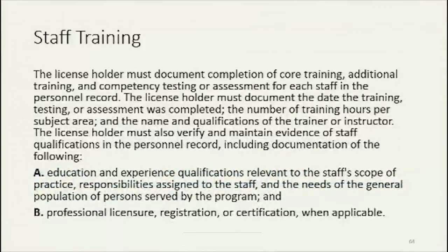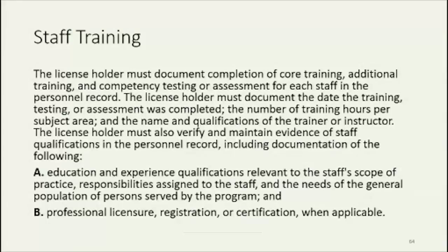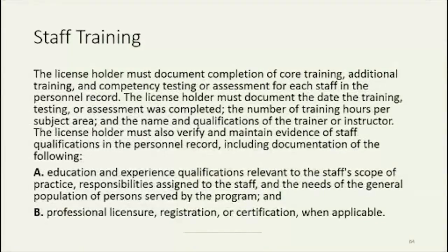License holders must document completion of core training, additional training, and competency testing or assessment for each staff in the personnel record. The license holder must document the date the training, testing, or assessment was completed, the number of training hours per subject area, and the name and qualifications of the trainer or instructor. The license holder must also verify and maintain evidence of staff qualifications in the personnel record, including documentation of education and experience qualifications relevant to the staff's scope of practice, responsibilities assigned to the staff, and needs of the general population of persons served by the program, as well as professional licensure, registration, or certification when applicable.